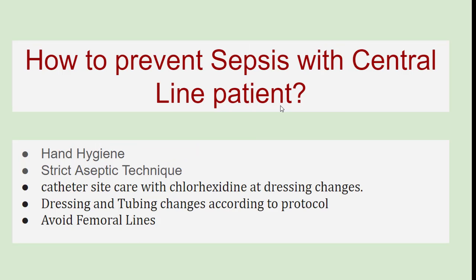How to prevent sepsis with central line patients: First, hand hygiene. Strict aseptic technique. Catheter site care with chlorhexidine. Dressing and tubing changes according to protocol. And avoid femoral lines.